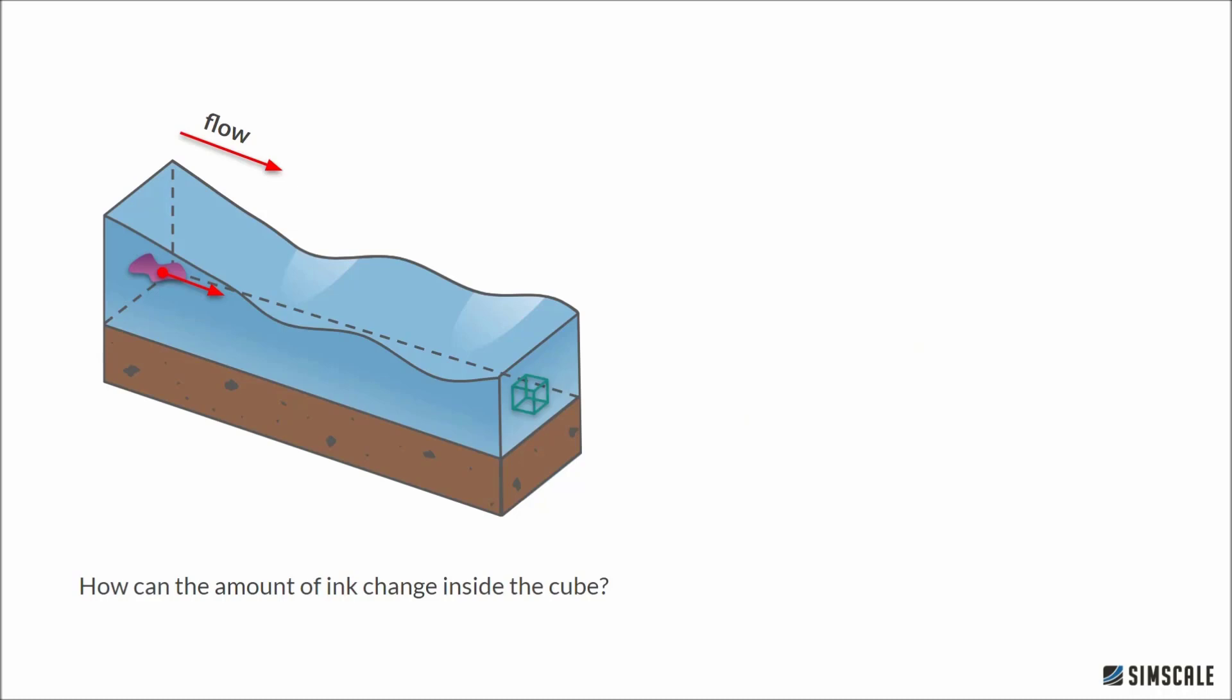If we take an example, imagine a river, where you place a wireframe cube somewhere in the river. Water can freely pass through this cube. Now imagine we inject ink at some point upstream of the cube, as shown in the picture. We can ask ourselves the question, how can the amount of ink inside the cube change?